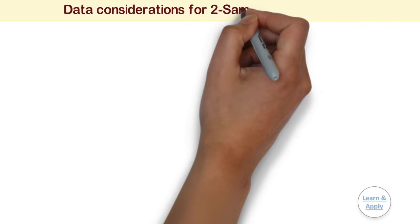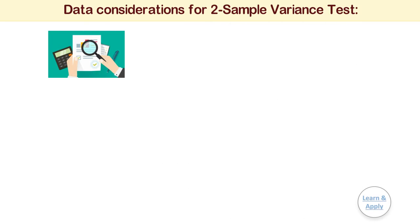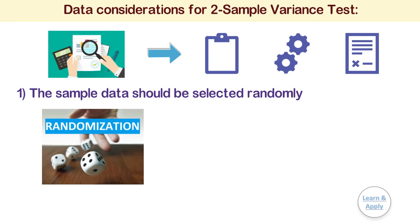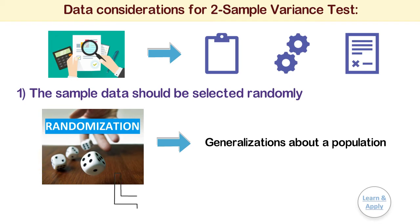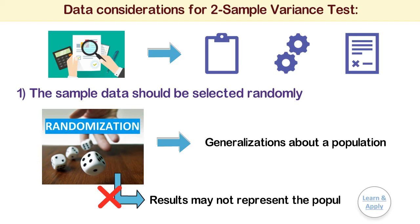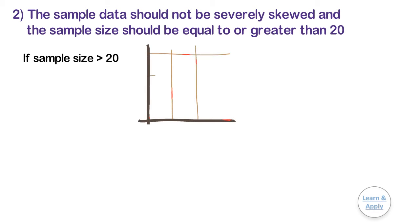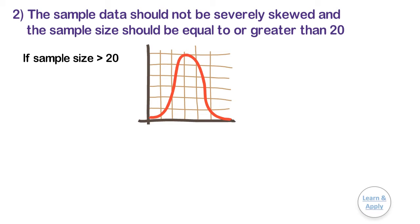Data considerations for two-sample variance test. To ensure that your results are valid, consider the following guidelines when you collect data, perform the analysis, and interpret your results. First, the sample data should be selected randomly, as random samples are used to make generalizations or inferences about a population — if not collected randomly, your results may not represent the population. Second, the sample data should not be severely skewed, and the sample size should be equal to or greater than 20. If the sample size is greater than 20 and the distribution is unimodal and continuous, the test performs appropriately even if data is mildly skewed.